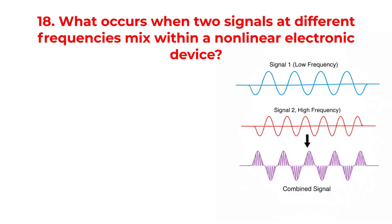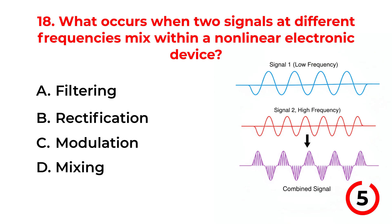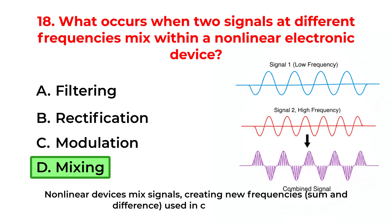What occurs when two signals at different frequencies mix within a nonlinear electronic device? A. Filtering. B. Rectification. C. Modulation. D. Mixing. The correct answer is Option D: Mixing. Nonlinear devices mix signals, creating new frequencies — sum and difference — used in communications.